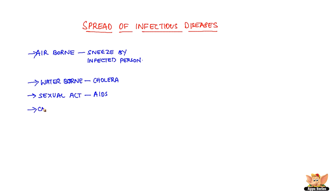Direct contacts spread infectious diseases. Casual physical contacts like handshakes or during sports like wrestling are a few causes.